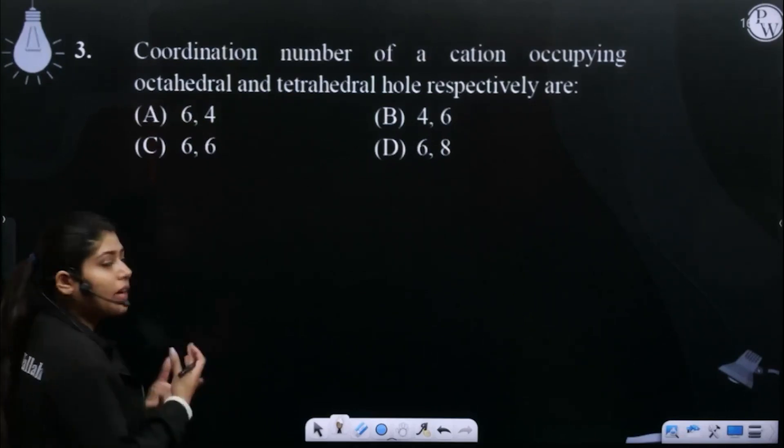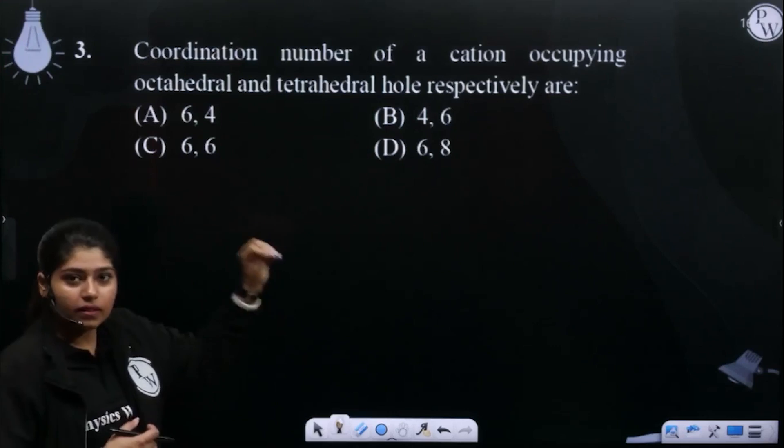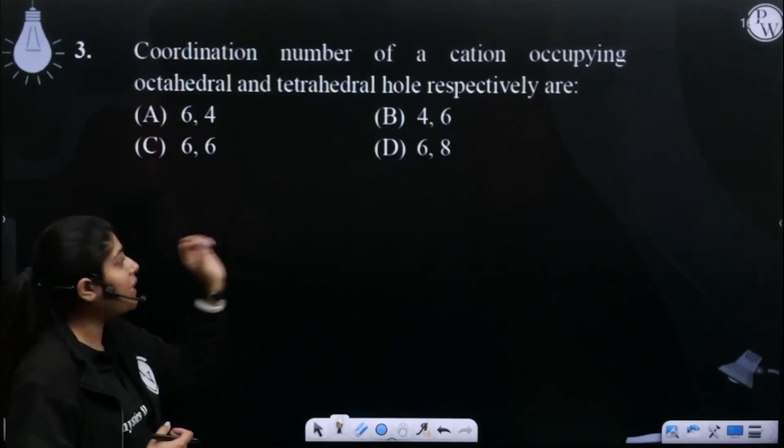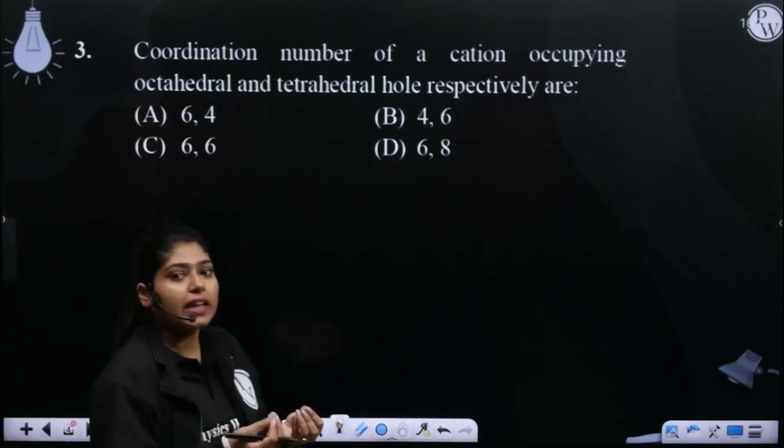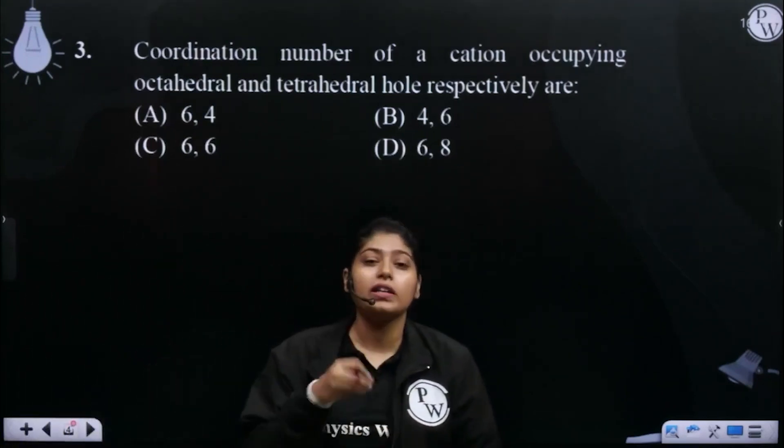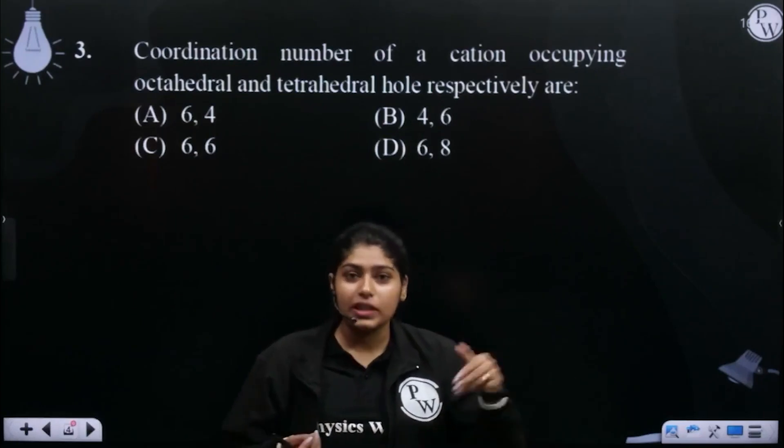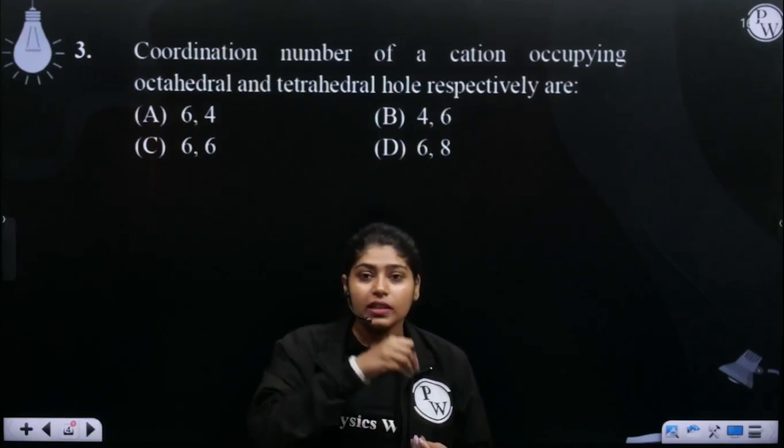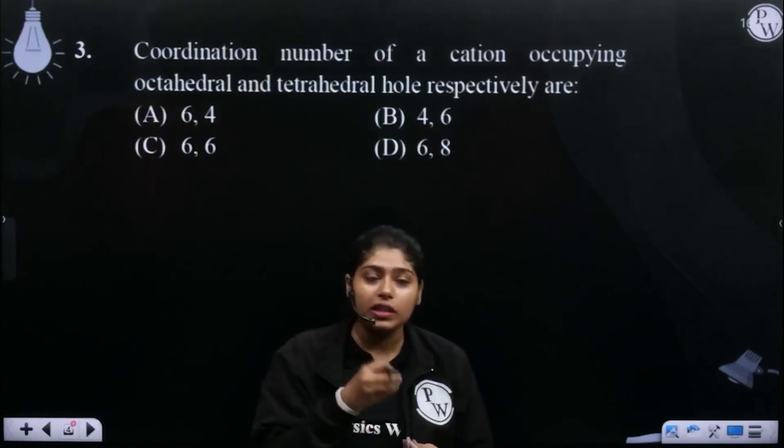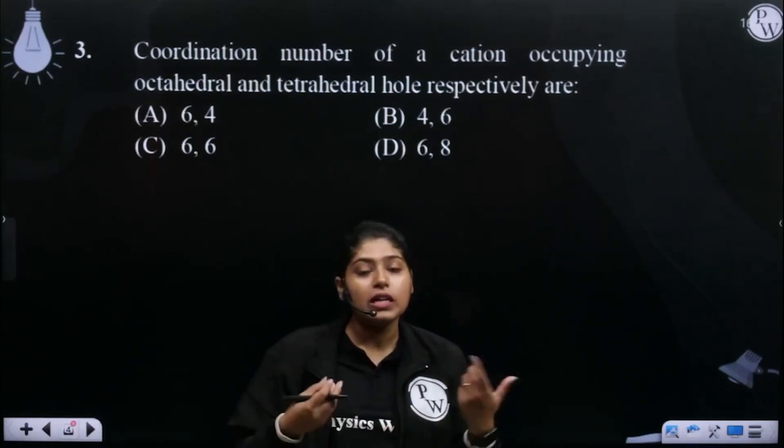What we are talking about is the voids we have kept one cation. The cation is present in that void. What's the coordination number of cation? The cation in that void is surrounded by other atoms. The coordination number of cation in the void - the cation from the void is surrounded by cations.